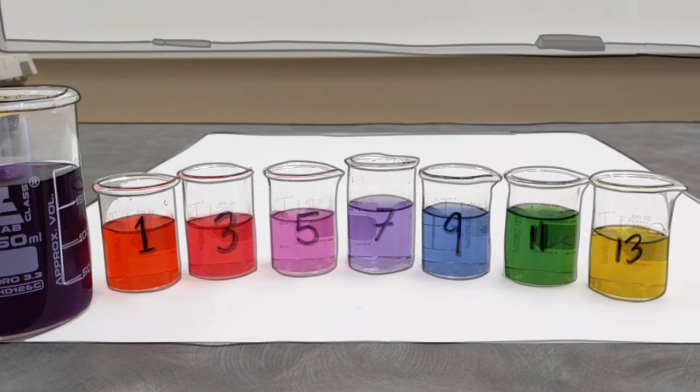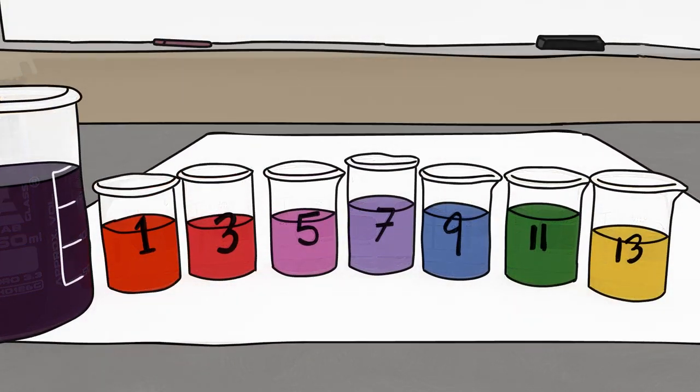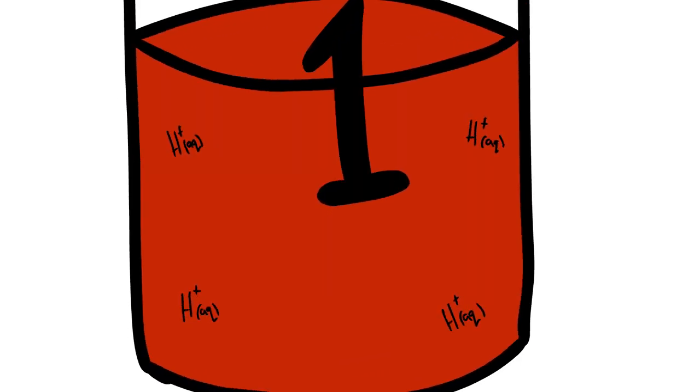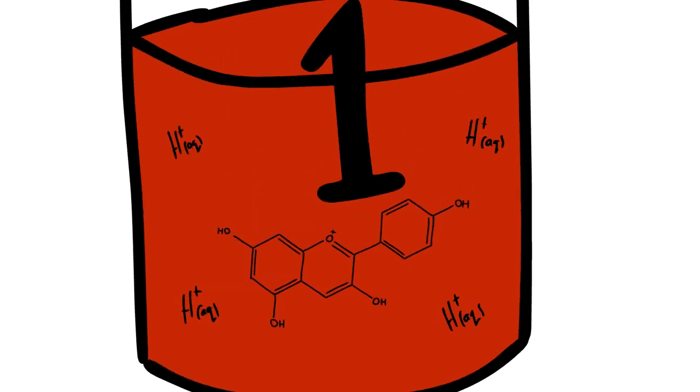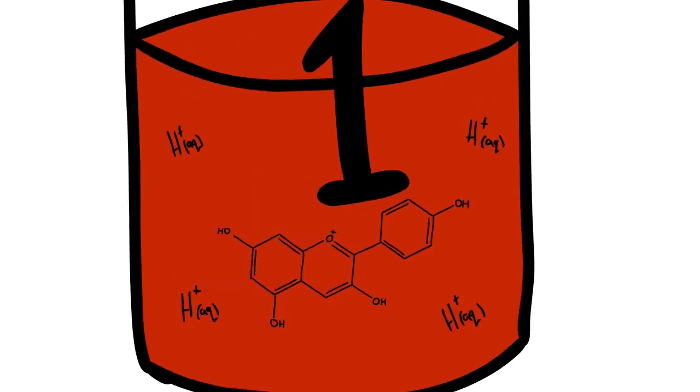Okay, so those are pretty colors, but why does it change? Let's start with the acid. At low pH, in the presence of a large excess of hydrogen ions, the anthocyanin is converted to the flavilium cation, shown here.